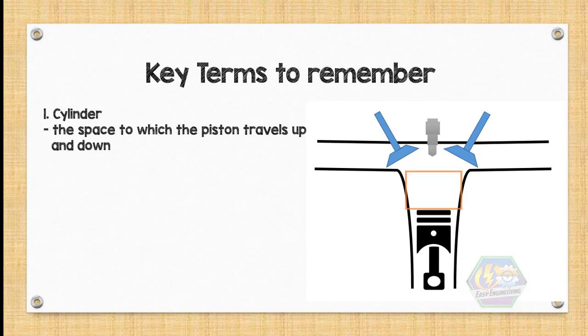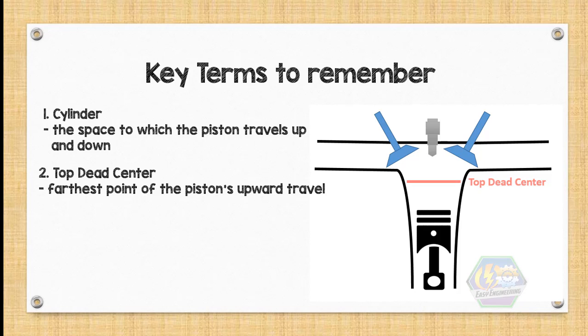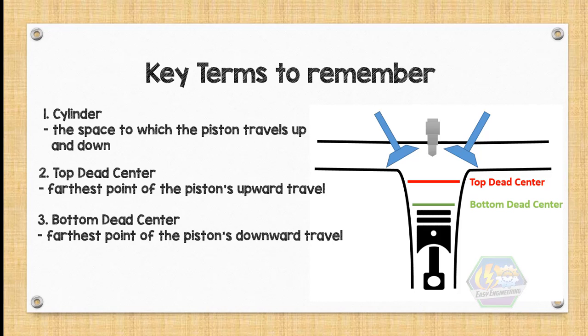To understand the strokes of this cycle, let's first name the key terms for this topic. First is the cylinder, the space to which the piston travels up and down. Top dead center, farthest point of the piston's upward travel. Bottom dead center, farthest point of the piston's downward travel.